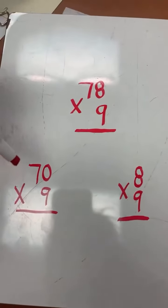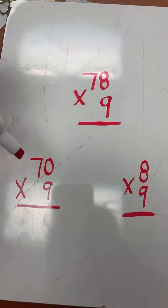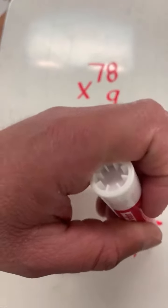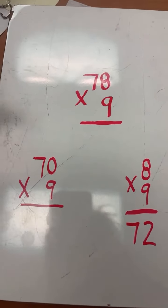So step 1: 8 times 9 equals 72. 70 times 9, it looks tricky, but very simple trick. You multiply 7 times 9 and then you add a 0 to your answer.